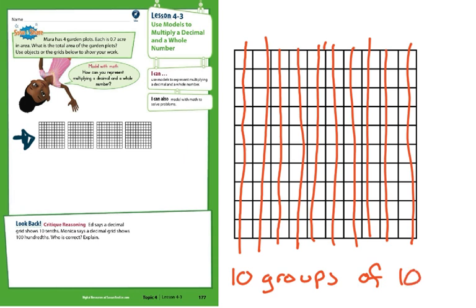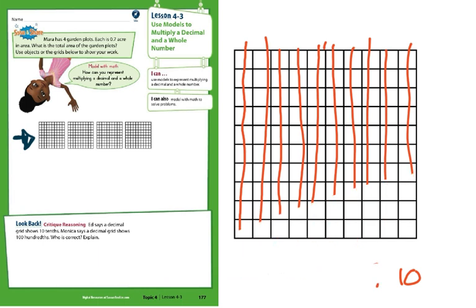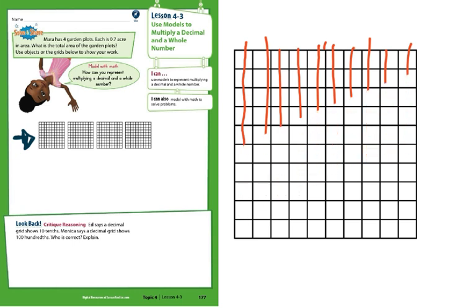But Monica, if you're looking here, Monica says that there are just 100 hundredths. So there are 100 boxes. So here's my question here too.